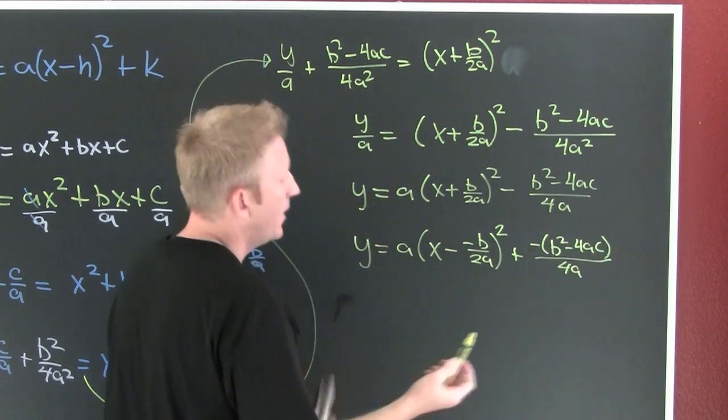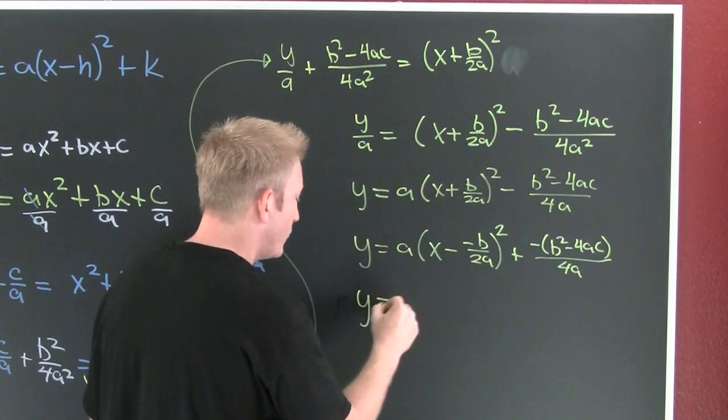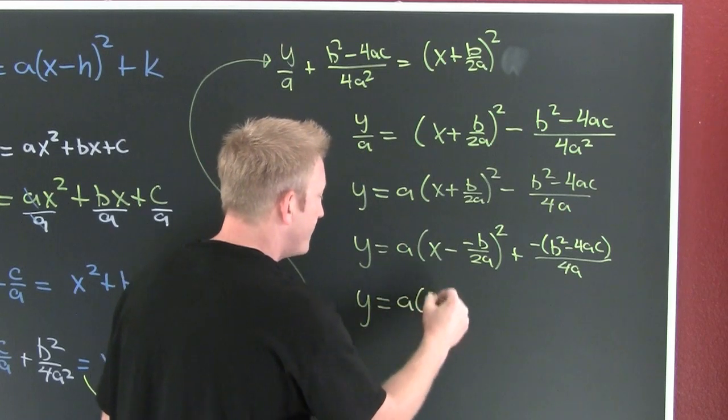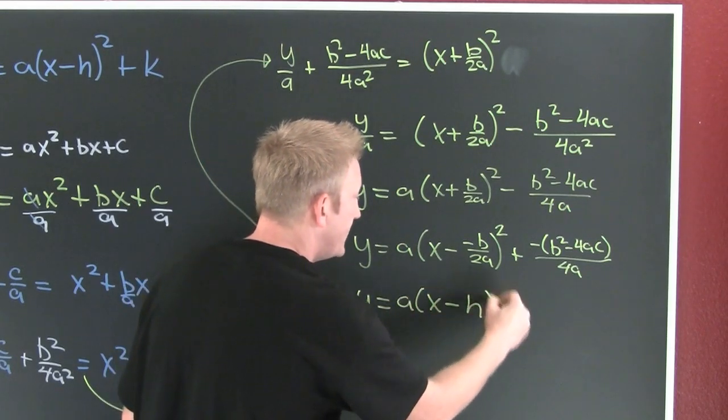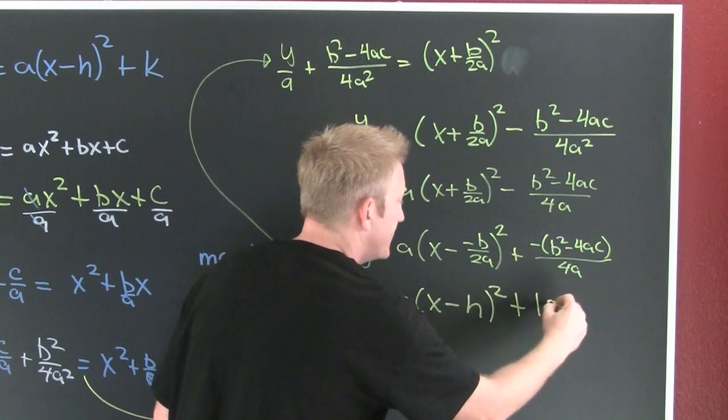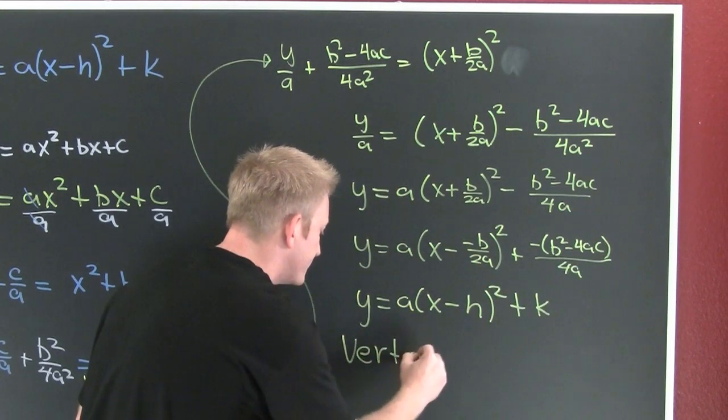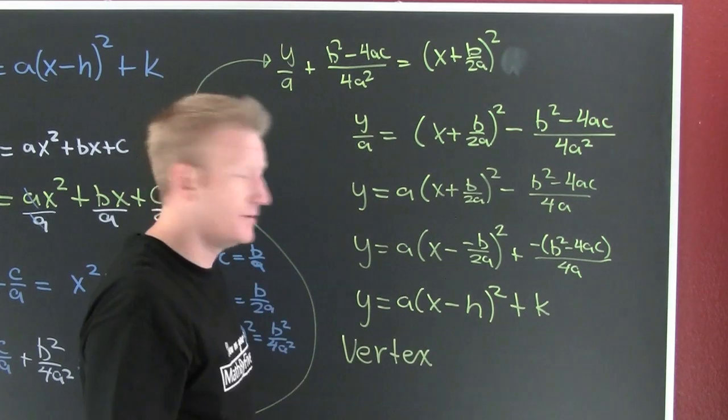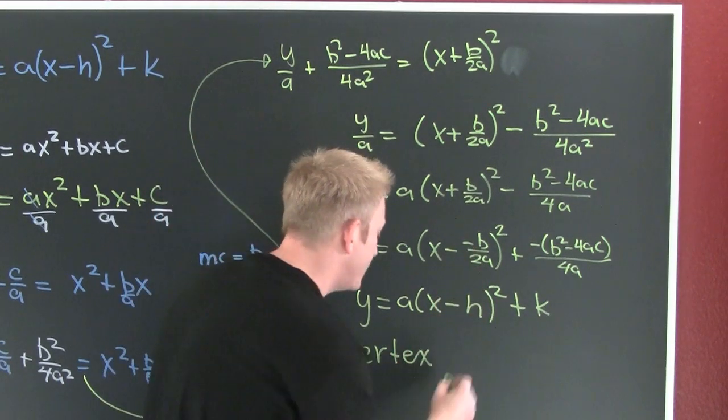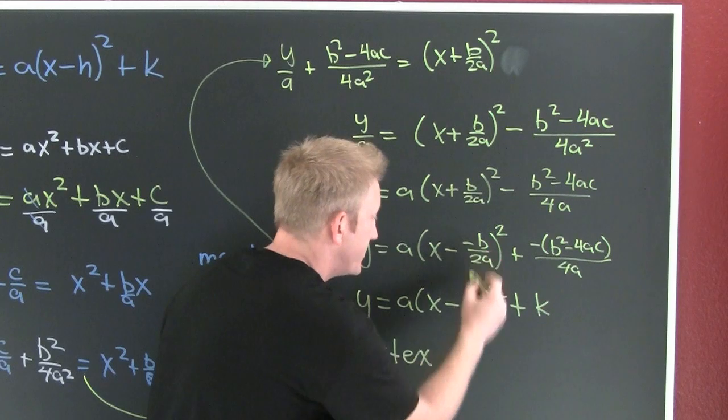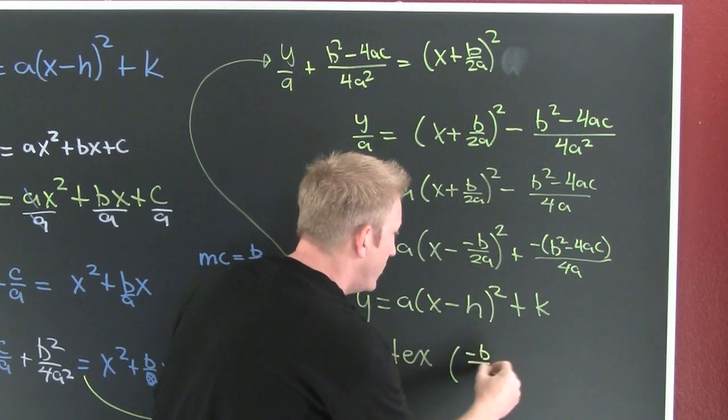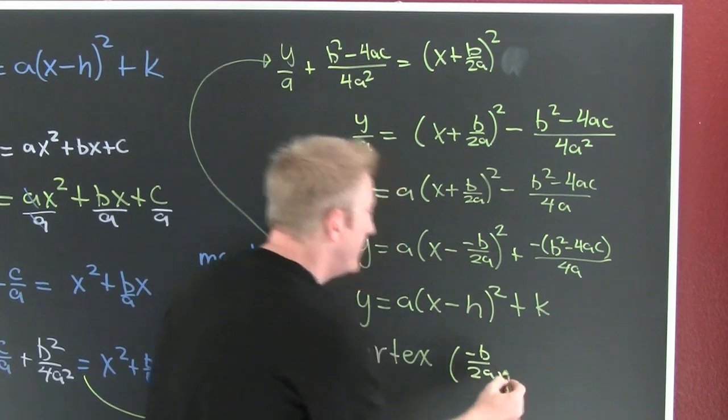All right, if I was going to match the pieces with y is equal to a(x - h)² plus k, I'd see my vertex. My vertex is going to be at h equals minus b over 2a.